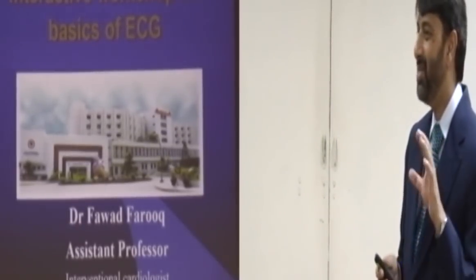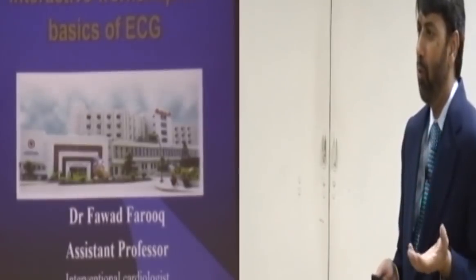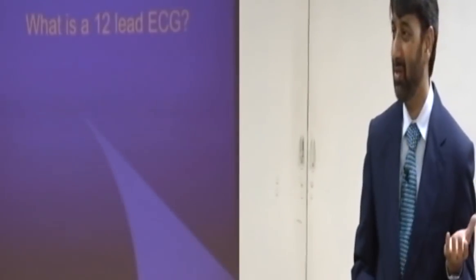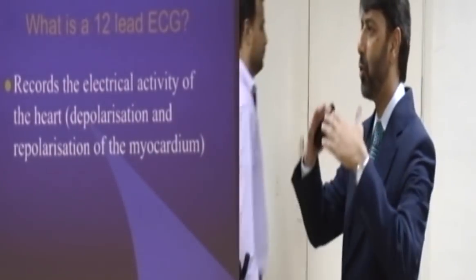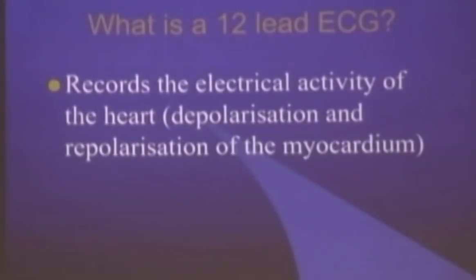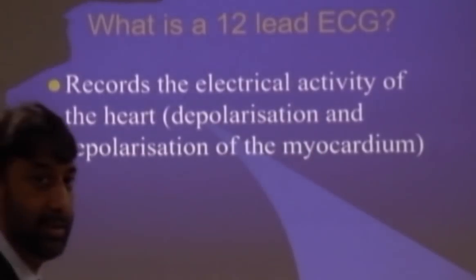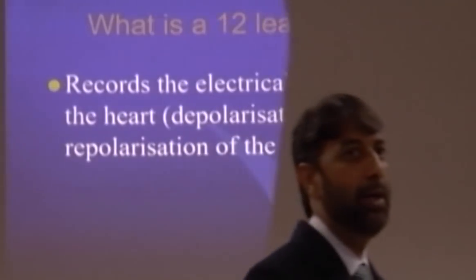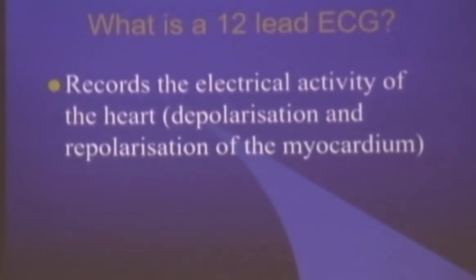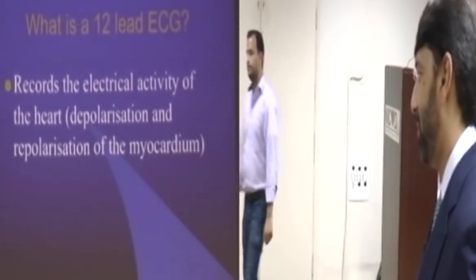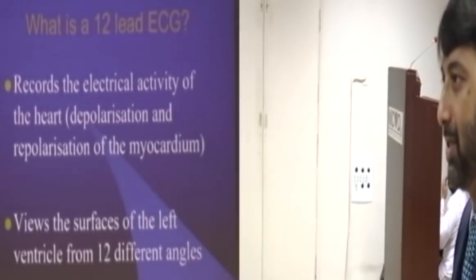Now, we all know what ECG is, but first we need to know what ECG actually is. ECG is a 12-lead recording of electrical activity generated by the heart. You view it from 12 different angles, so the same activity is recorded in 12 different fashions, in 12 different leads.